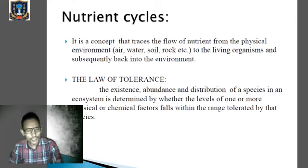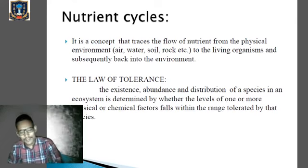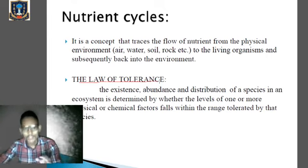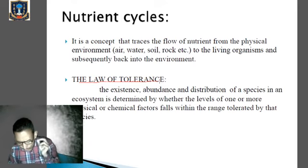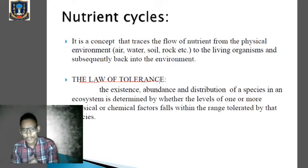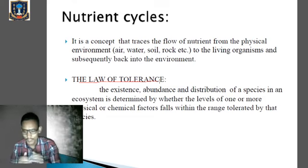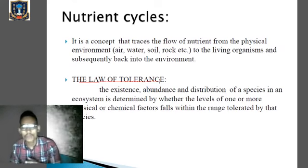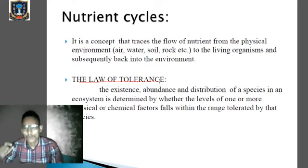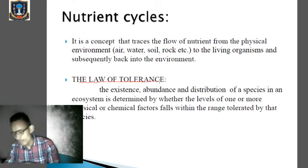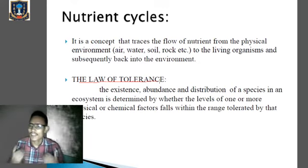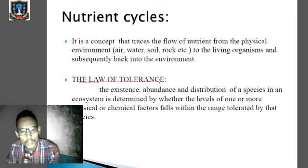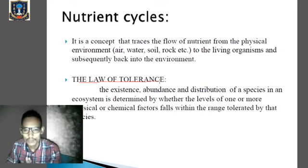Before that, remember the law of tolerance. It states that the existence, abundance, and distribution of a species is determined by the levels of one or more physical or chemical factors which fall within the range tolerated by that species. That means the distribution, occurrence, and abundance of a species in a particular ecosystem is under the control of physical or chemical factors. If organisms cannot tolerate those factors, they cannot survive or exist in that ecosystem.